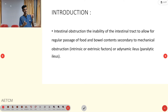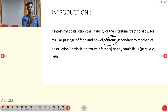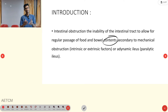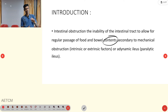The structured definition: intestinal obstruction is the inability of the intestinal tract to allow for the regular passage of food and bowel content. Bowel content includes gas, undigested or partly digested food, and secretions such as pancreatic and biliary tract secretions.